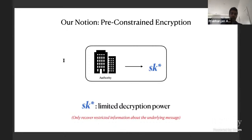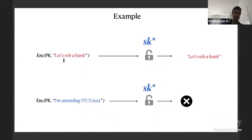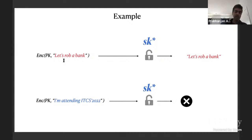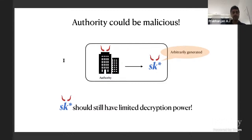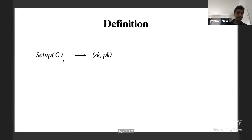In pre-constrained encryption, the authority generates the secret key, but it has very limited decryption power — it can only recover some restricted information about the underlying message. For example, if the message says 'let's rob a bank,' the key should be able to recover it. But if it says 'I'm attending ITCS,' it should not be able to decrypt. Importantly, there is no assumption that the authority is honest.